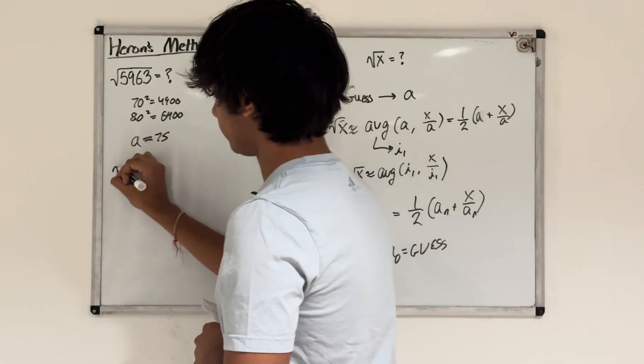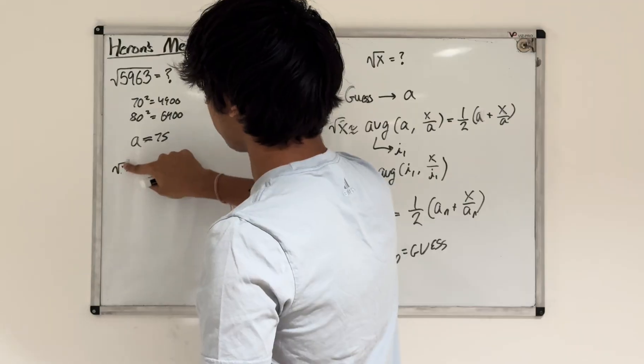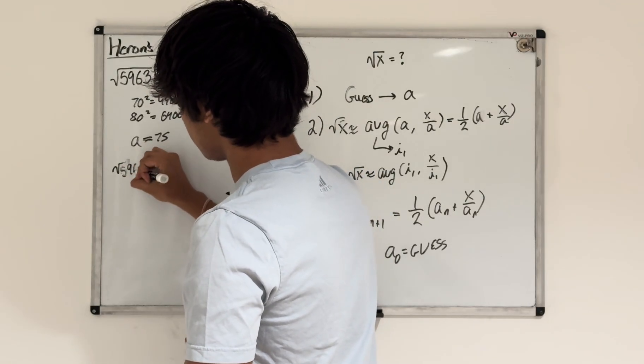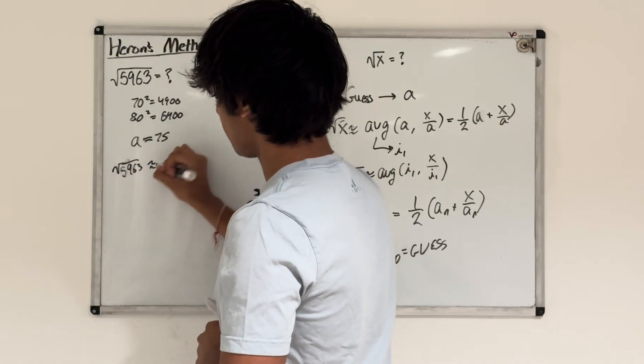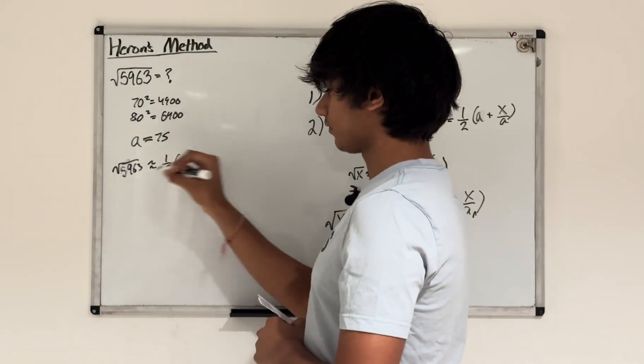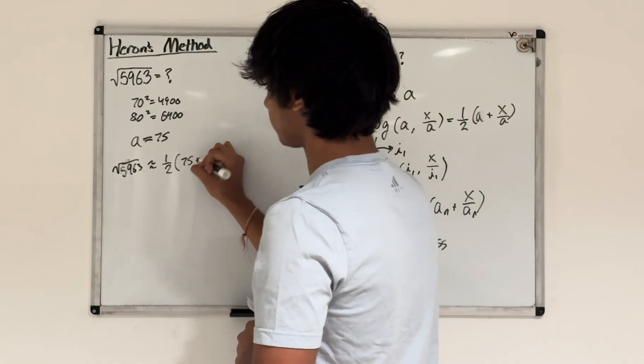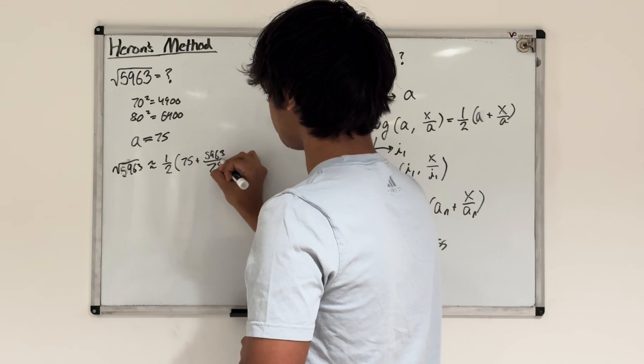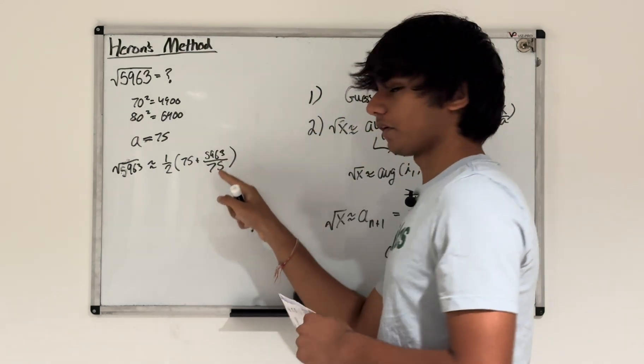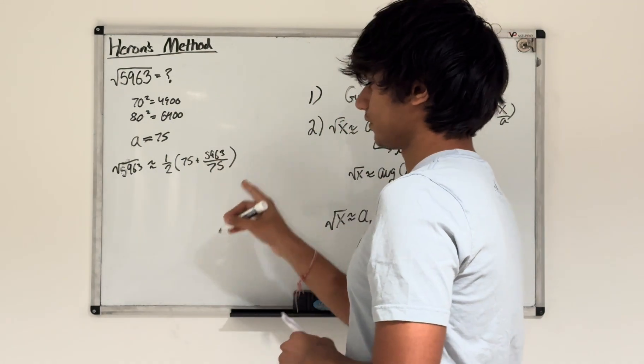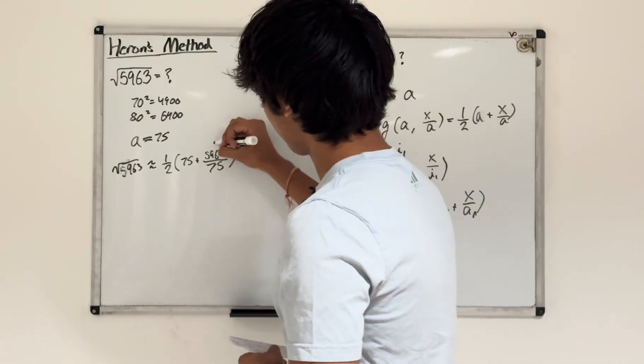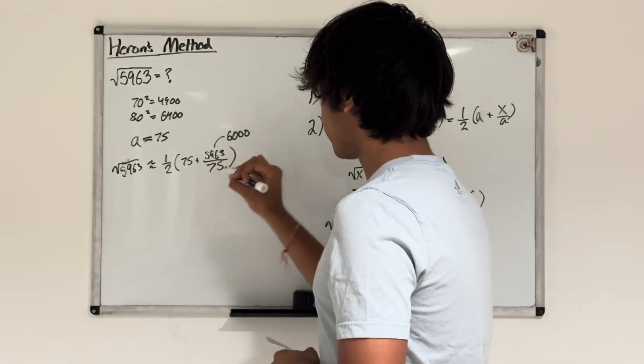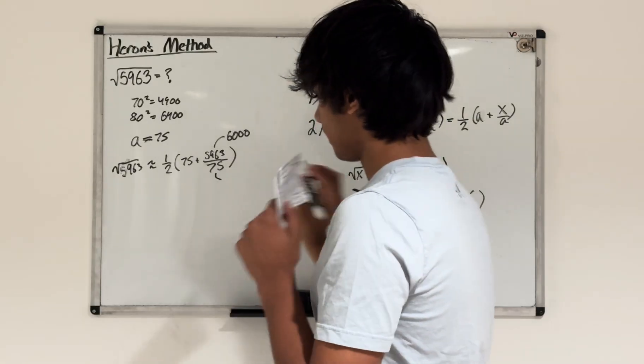From here, all I need to do is say that the square root of 5,963, that approximation is about 1 half times this guess, 75, plus this number, 5,963, divided by 75. This was a little hard to do in your head, so I'll just say 5,963, that's basically 6,000. And then 75, I know that 75 times 4 is 300.